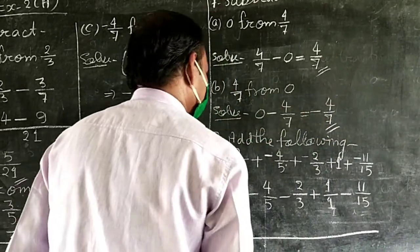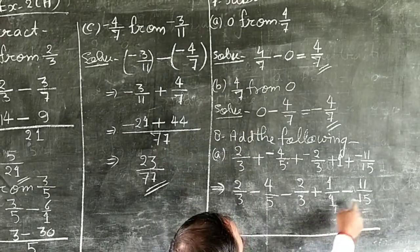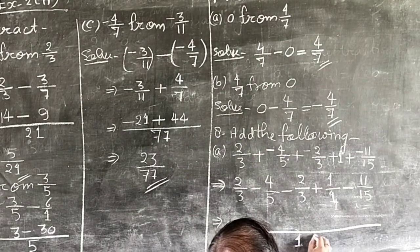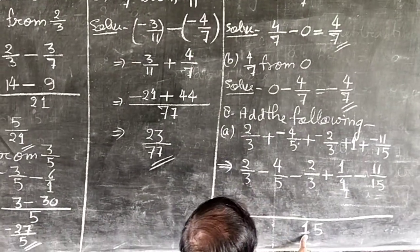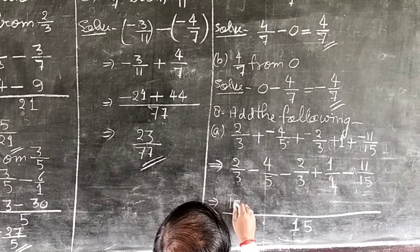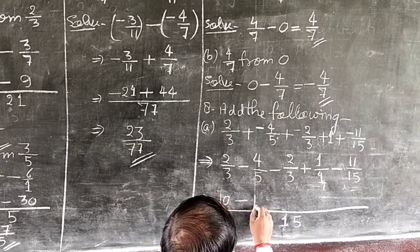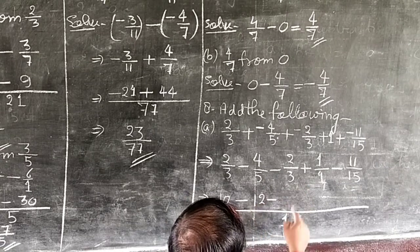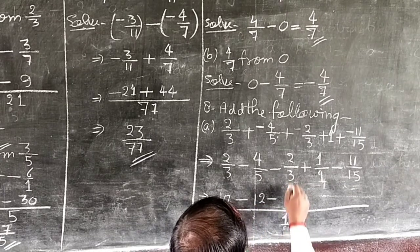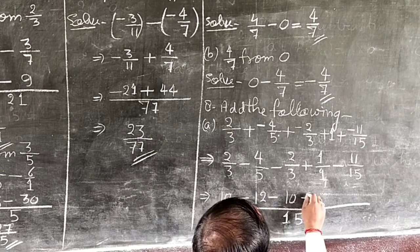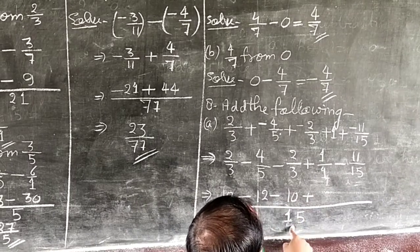LCM of denominators 3, 5, 3, 1, and 15 is 15. So we have: 5 times 2 equals 10, minus 3 times 4 equals 12, minus 5 times 2 equals 10, plus 15 times 1 equals 15.